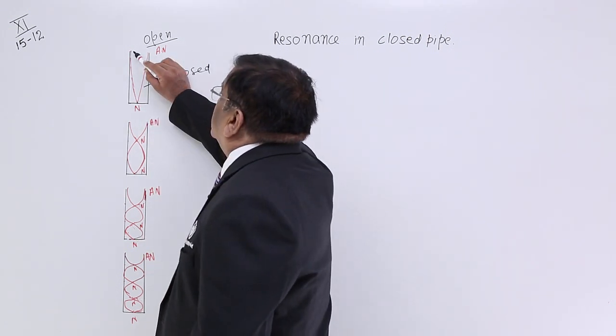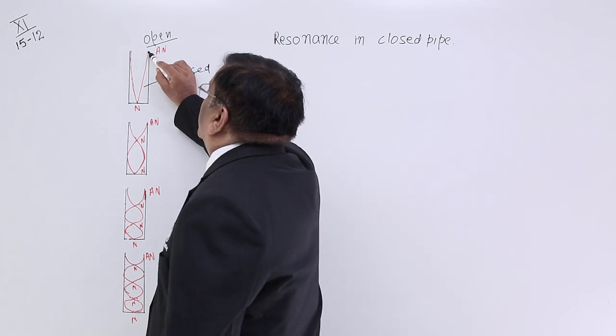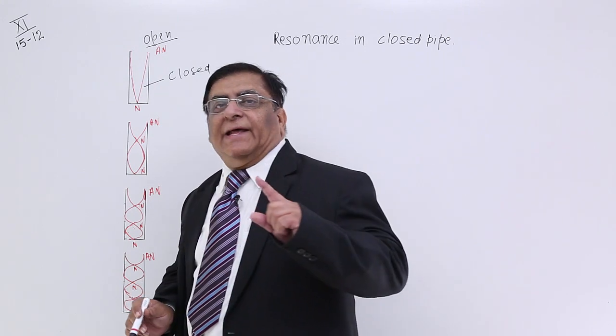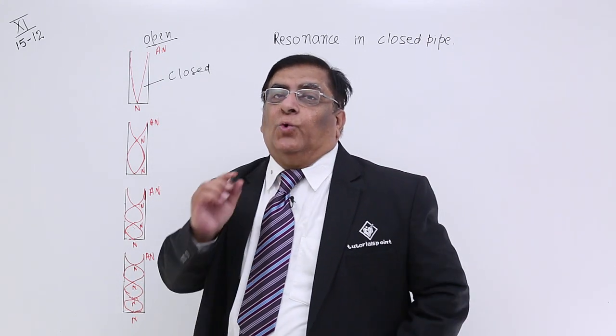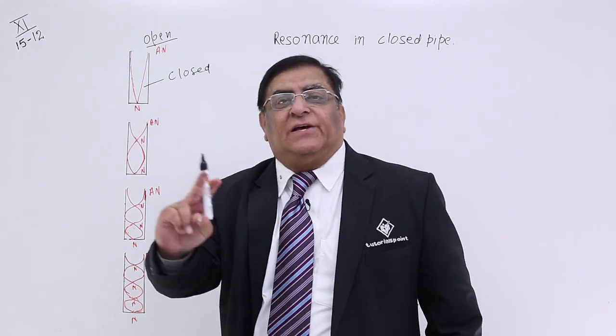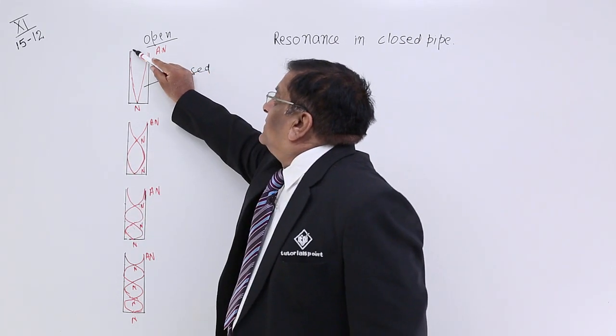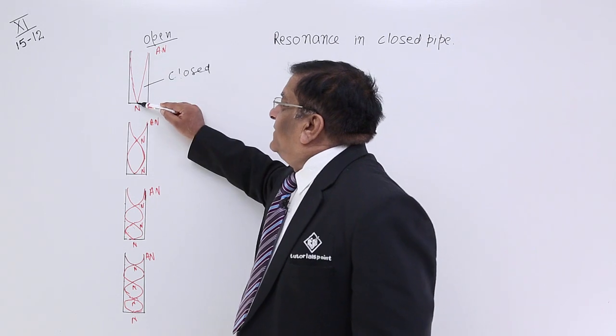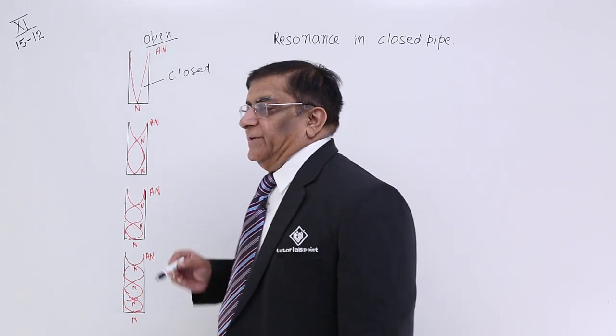And this end of the pipe is open. When there is a freedom of motion, then we can never have a node at that point. Always there will be antinode. So this location is anti-node all the time and this location is node at all the time.